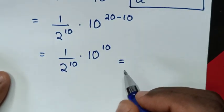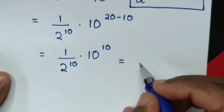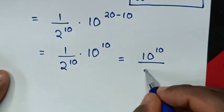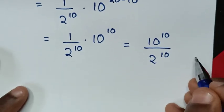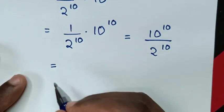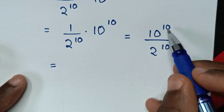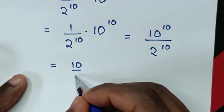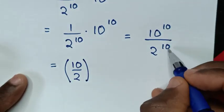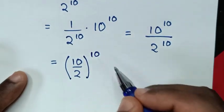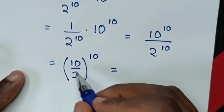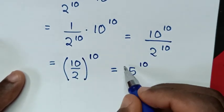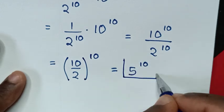Then it will be equal to 1 times 10 power of 10, which is 10 power of 10, over 2 power of 10. Then it will be equal to — in here, division of exponents with different base but same power — so it will be 10 over 2, then bracket common power of 10. Then it will be equal to 10 divided by 2, which is 5 power of 10. Therefore 5 power of 10 is our final answer.